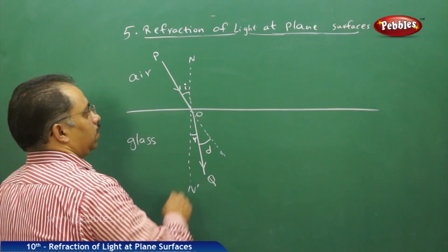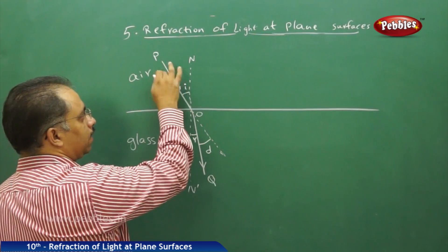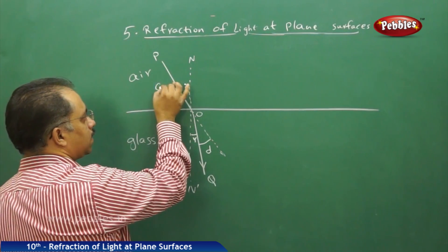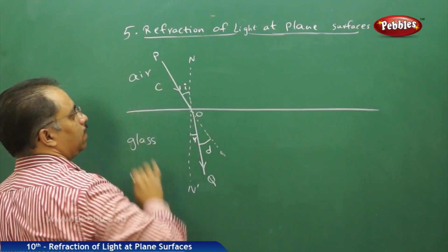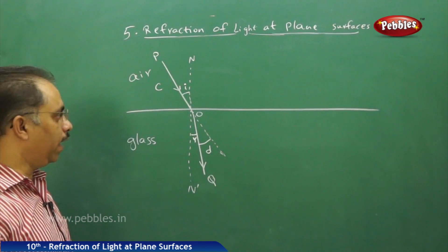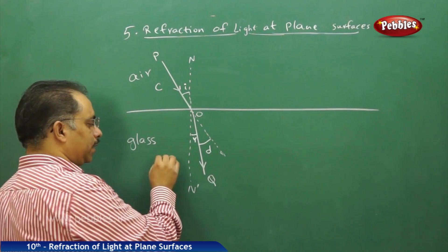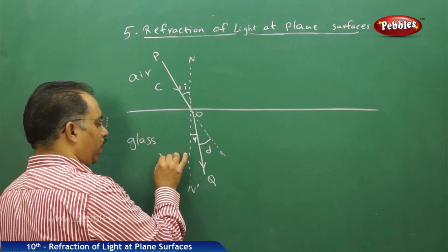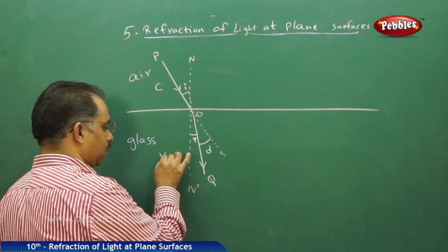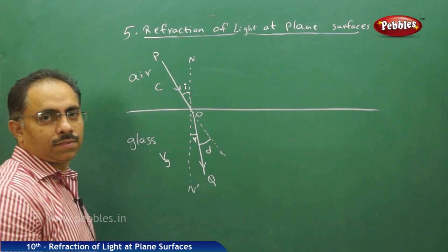Now let us assume that the velocity of light in air is C, and let us say VG is the velocity of light in glass.